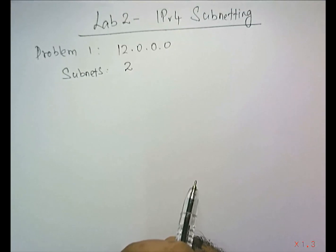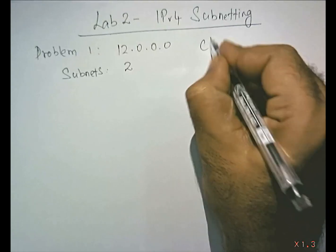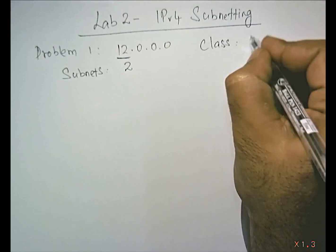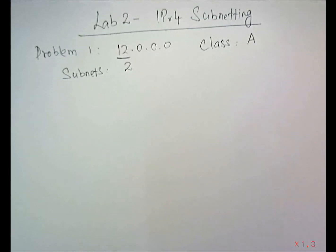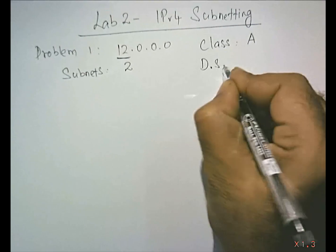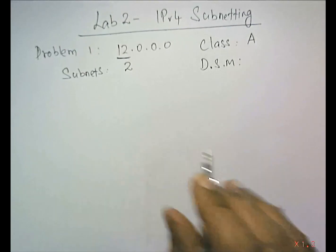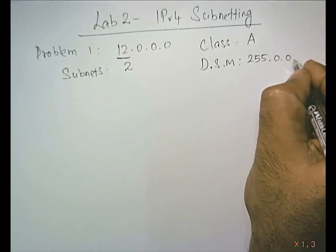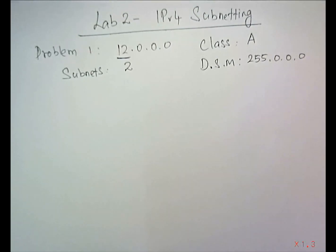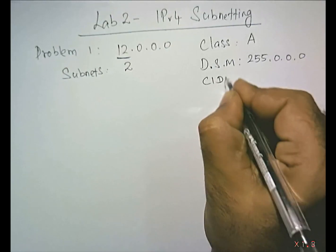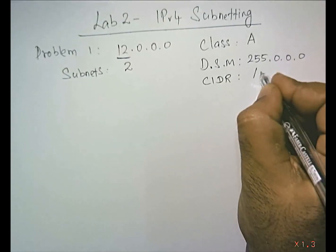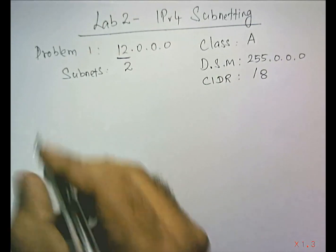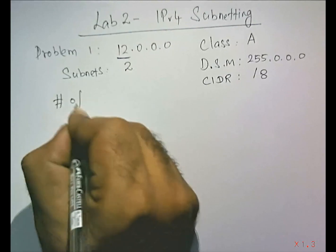First, let us find the class. 12 means it belongs to Class A, so it is a Class A IP address. The default subnet mask for Class A is 255.0.0.0. The CIDR value is 8. The next important thing is the number of bits to be borrowed.